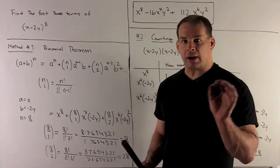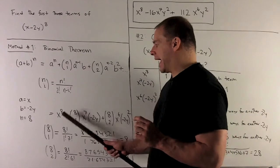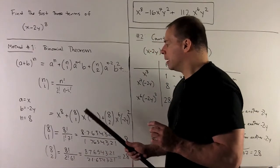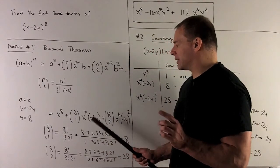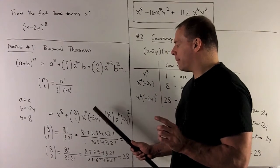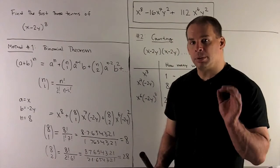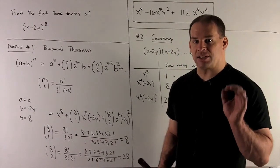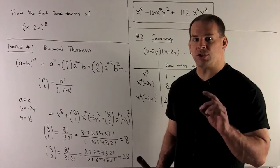So, we write out our first three terms of x^8 + (8 choose 1) times x^7 times (-2y) + (8 choose 2) times x^6 times (-2y)^2.